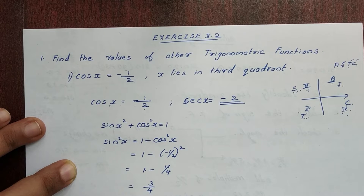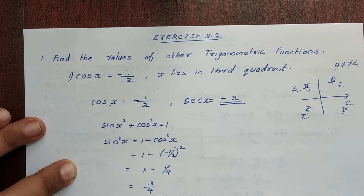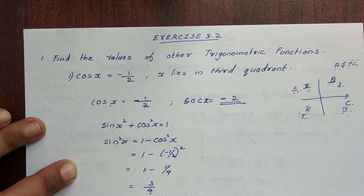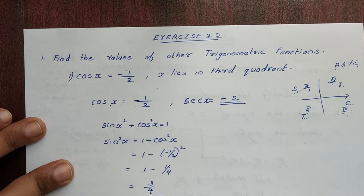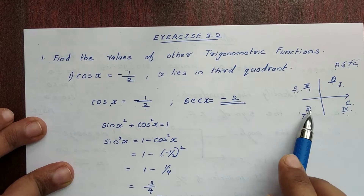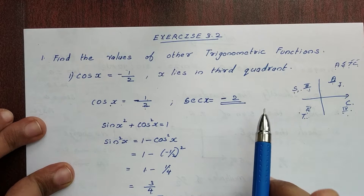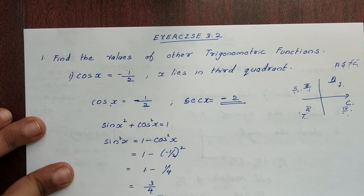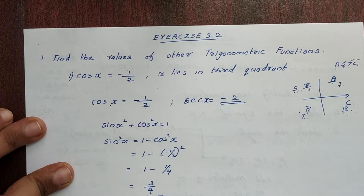So sin²x is equal to 1 minus 1 by 4, which gives us 4 minus 1 divided by 4, that is 3 divided by 4. Therefore sin x equals root 3 divided by 2. In the third quadrant, sin is negative, so sin x equals minus root 3 divided by 2.